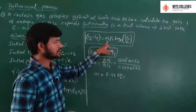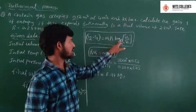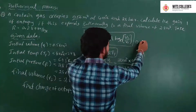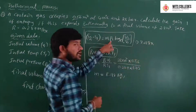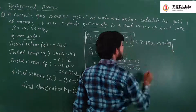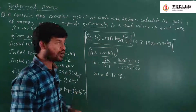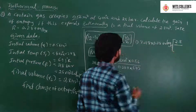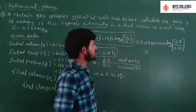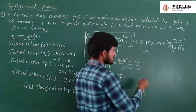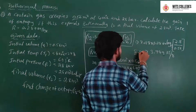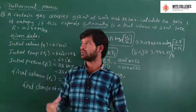Substituting all values into S2 minus S1 equals M·R·ln(V2/V1): M = 0.118, R = 0.287, V2 = 2.8, V1 = 0.56. We obtain S2 minus S1 equals 3.749 kJ per Kelvin. This is the change of entropy for the isothermal process.